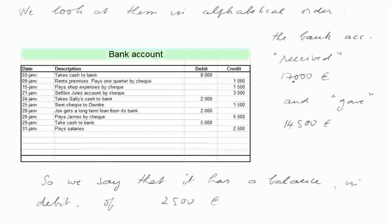The bank account received 17,000 euros and gave 14,500 euros. We receive things recorded in debit. So we received 8,000 when we took cash to the bank, 2,000 when we took Sally's cash to bank, 2,000 when we got a long-term loan, and 5,000 when we took the cash from sales to bank — all adding up to 17,000. And we gave, in checks, 14,500. So it has a balance in debit of 2,500.